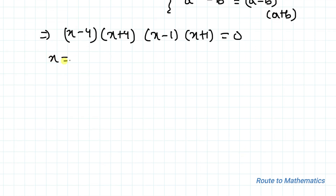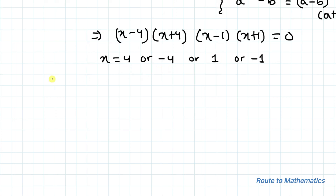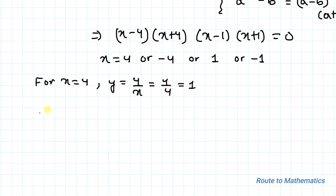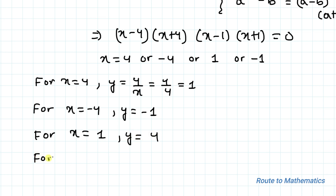From here the possible values of x are x = 4, -4, 1, or -1. Now let's find the value of y for each value of x using y = 4/x. For x = 4, y = 1. For x = -4, y = -1. For x = 1, y = 4. For x = -1, y = -4. These are the possible values of x and y, which is our answer.